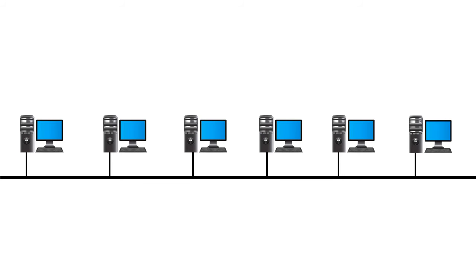Now let us discuss about the limitations of bus topology. It is quite difficult to detect the specific area of fault if one arises in the network, because there are many taps which connect the drop lines over the backbone cable. These networks are not scalable, as there is a limit to the number of nodes that can be connected with a single backbone cable, making it difficult to extend the existing network with more networking devices.